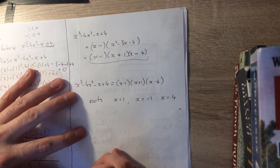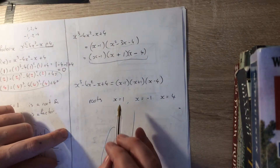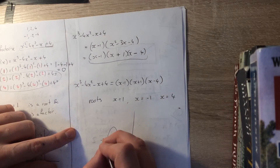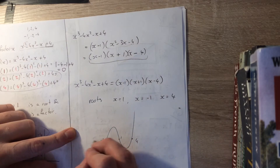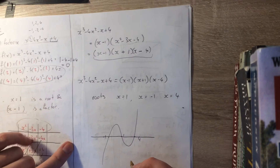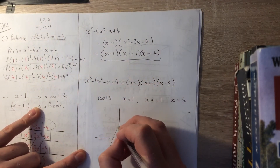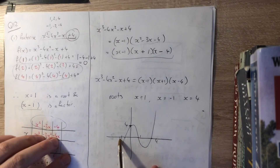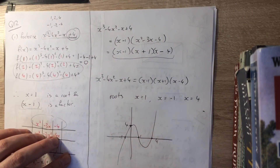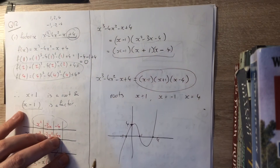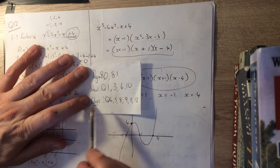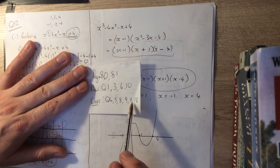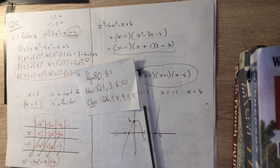When asked to sketch the cubic, these functions always have a characteristic look and the roots are where they cross the x-axis. So this cubic crosses at minus 1, 1, and 4. There's also a y-intercept; the last number of the polynomial is 4, so the y-intercept is at 4. That's what we were asked to do — factorize fully. For homework, do page 80 and 81 questions 1, 3, 6, and 10. In class we'll continue with questions 4, 5, 8, 9, 11, and finish question 12.